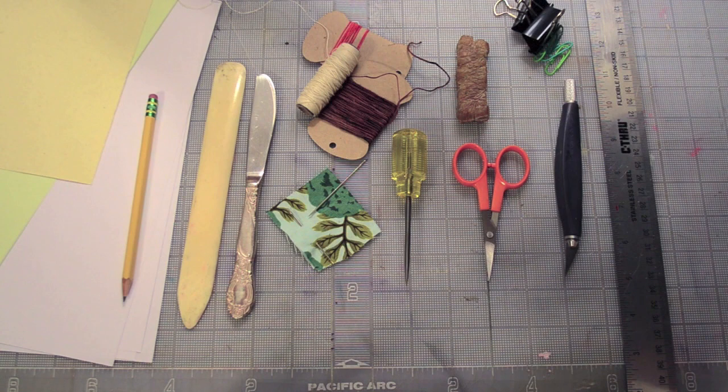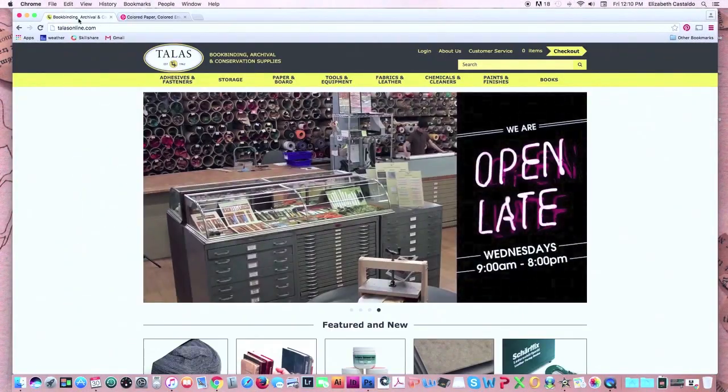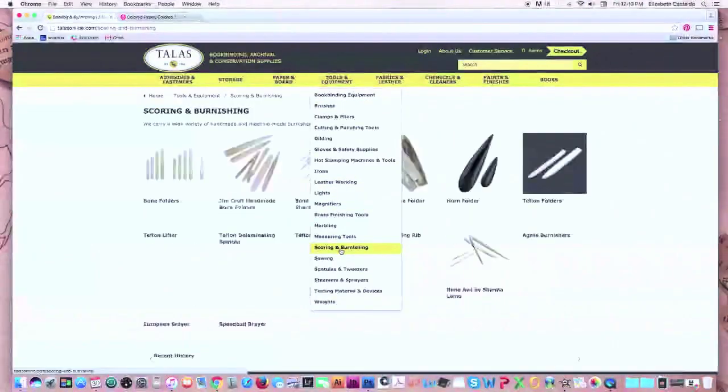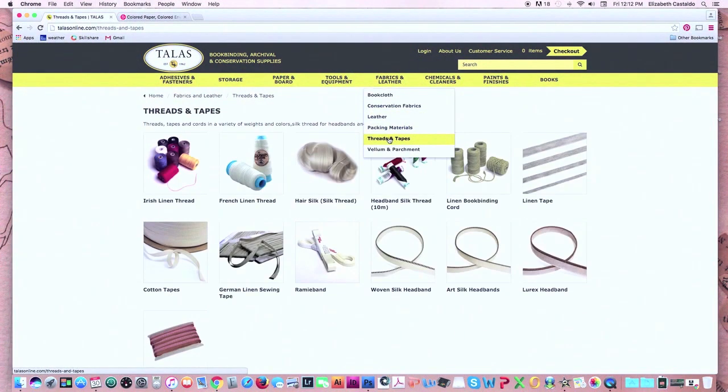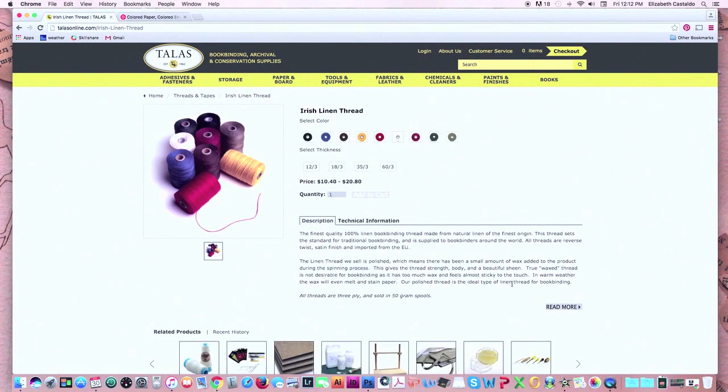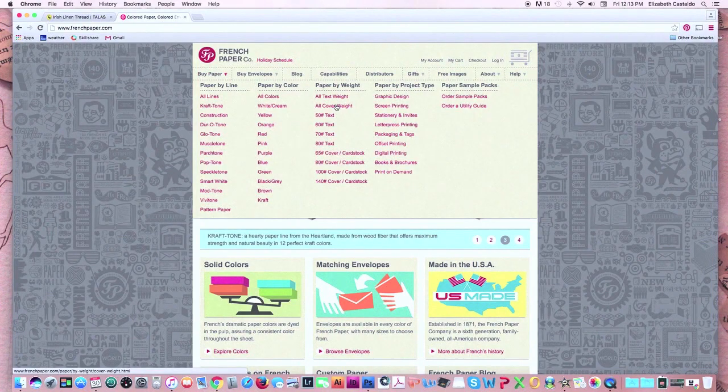You should be able to find these items at any art supply store, but two great resources for these things are Talas, a store that specializes in binding materials, and the French Paper Company which sells interesting text and cover-weight papers that you can use in a printer or copier. You can find a list of these materials in the project section of this class.